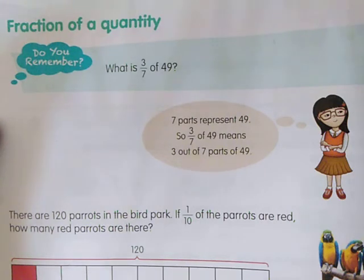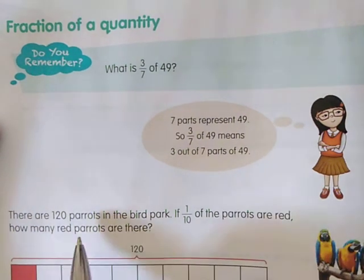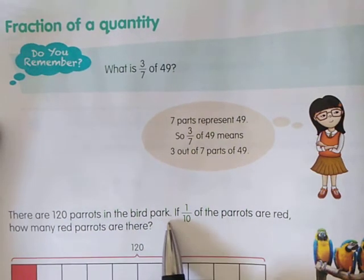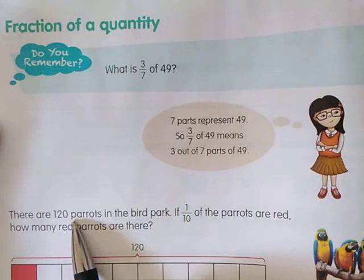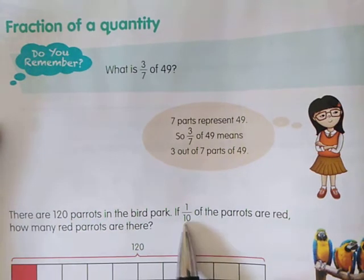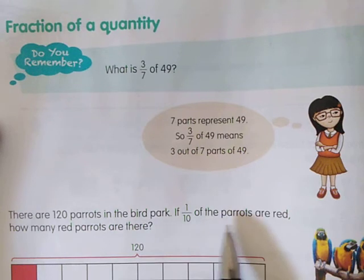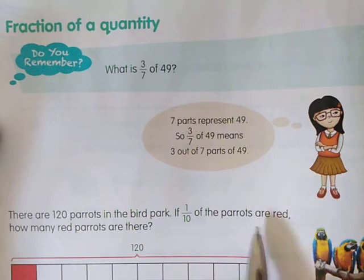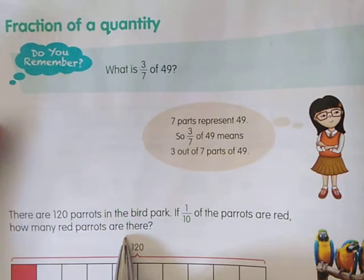Now today we will see some examples based on fraction of quantity. Here we have: there are 120 parrots in the bird park. Total parrots are 120. If one upon ten of the parrots are red, how many red parrots are there?